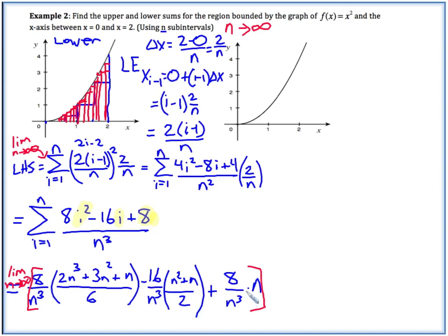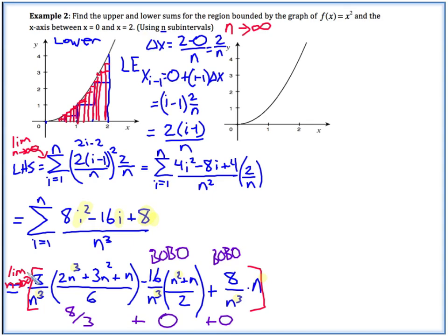We can evaluate this using our BOBO/Bottom rule. Looking at the first term, the exponents of n are the same (n³ on top and n³ on bottom), so the limit equals the ratio of leading coefficients: 8 times 2 over 6, which is 8/3. In the next term n³ is on the bottom and n² on top — bigger on the bottom, so that limit equals 0. Similarly the last term also goes to 0. So the limit as n goes to infinity of our lower sum is 8/3.